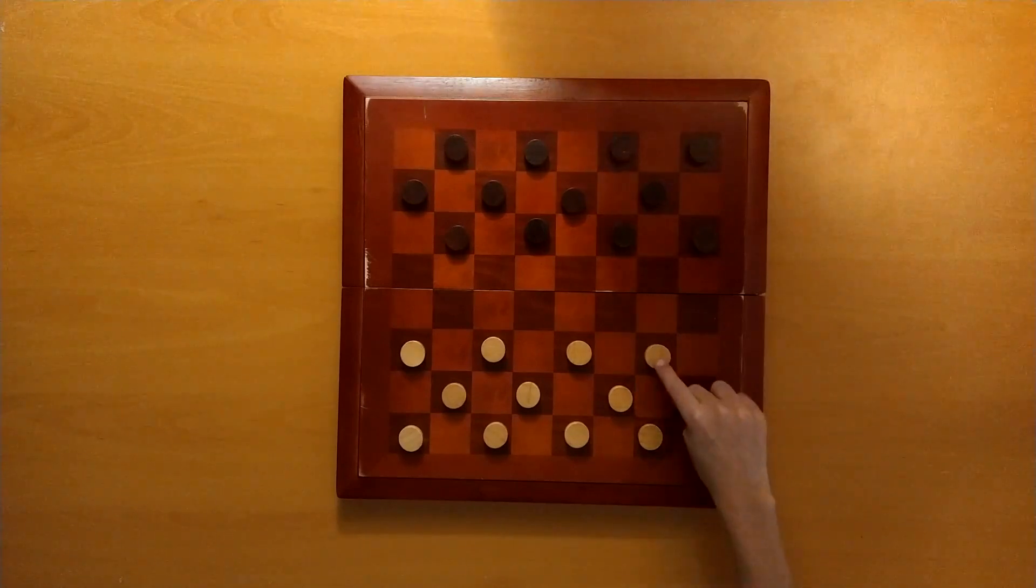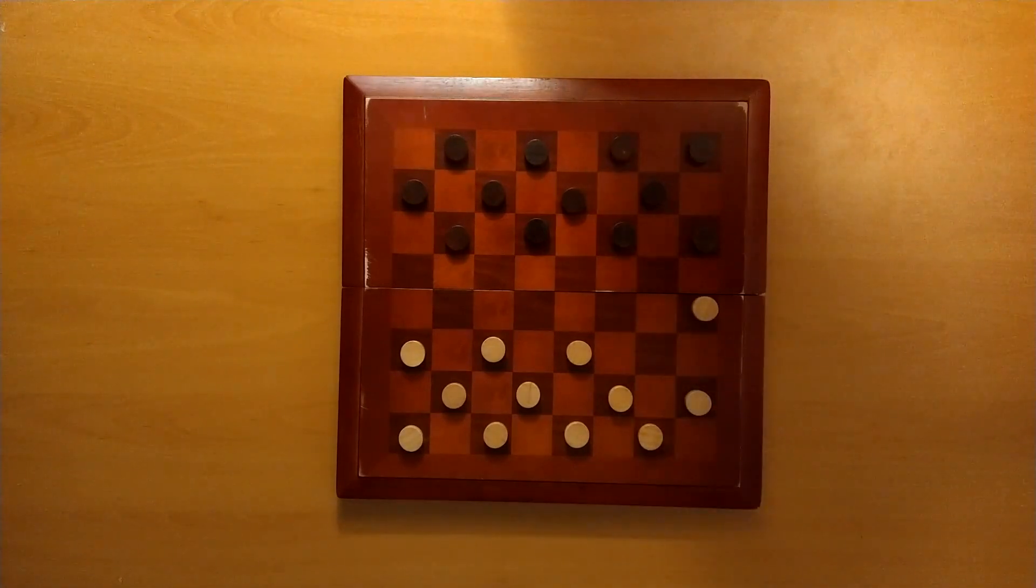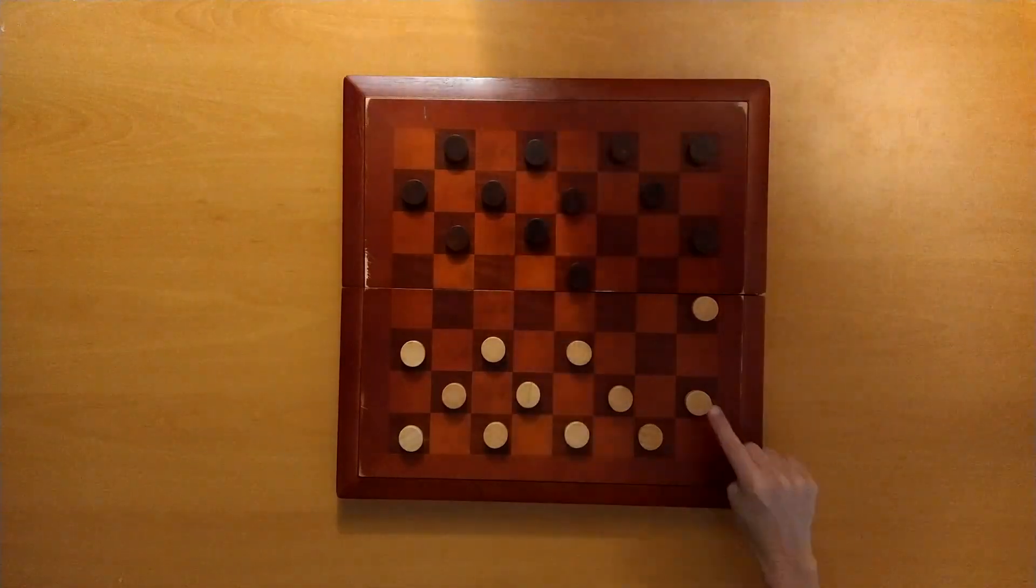On your turn, move one space diagonally on the black squares toward your opponent. You may not move backwards.